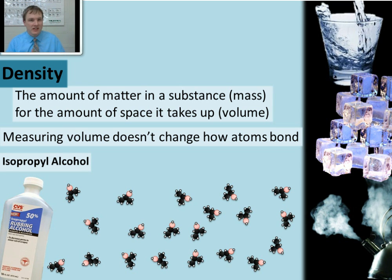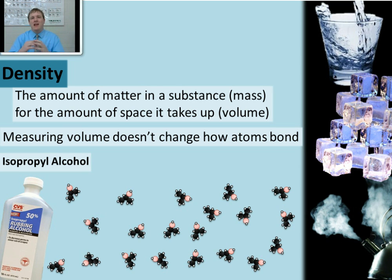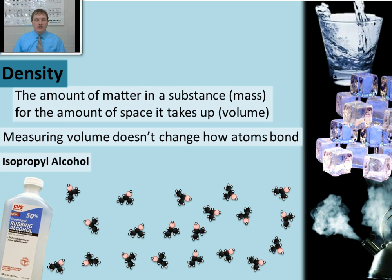Isopropyl alcohol is an extremely flammable, extremely lightweight substance that honestly doesn't have a whole lot of density compared to other substances. The reason why is that the atoms that make up isopropyl alcohol — you can see there's a red oxygen atom, three black carbon atoms, and eight white hydrogen atoms pictured — those atoms all have very low masses. They're way near the top of the periodic table where atoms are very, very light. Also, isopropyl alcohol molecules push each other apart; they sort of repel each other, which gives them a lot of space in between, meaning they take up a lot of space but don't have a lot of mass, and therefore don't have a lot of density either.